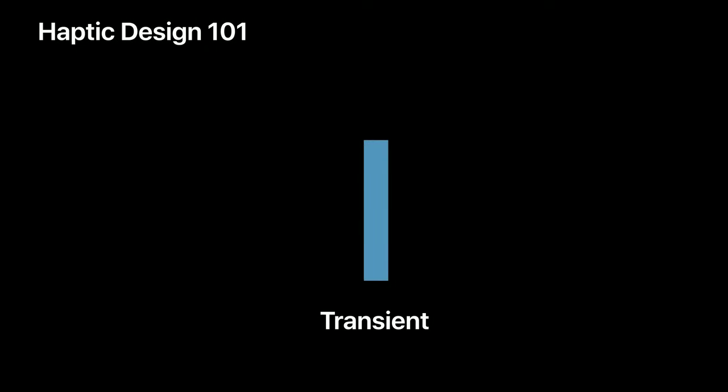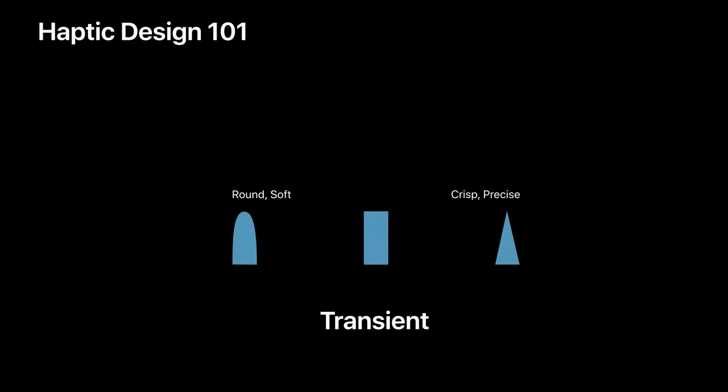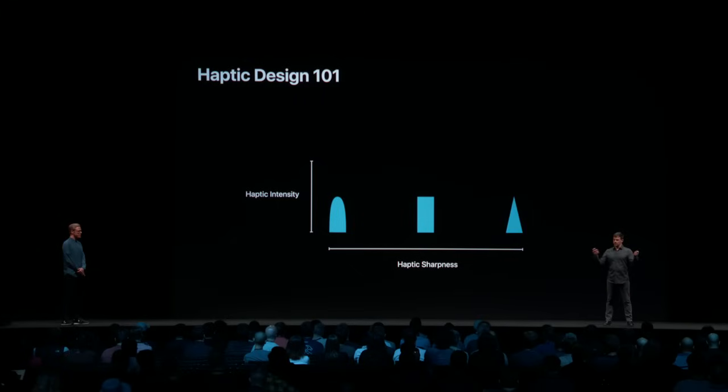Our transient becomes a simple rectangle. Because our Taptic Engine is an exceptional piece of haptic engineering, we can modulate the experience in different ways. First, we can modulate the intensity or the amplitude. We can also make it feel more round or soft, or at the other extreme, more precise and crisp. This completes our quick introduction to haptic design and the Core Haptics API: one intensity you can modulate and another design dimension, haptic sharpness, for two types of events — continuous and transient.